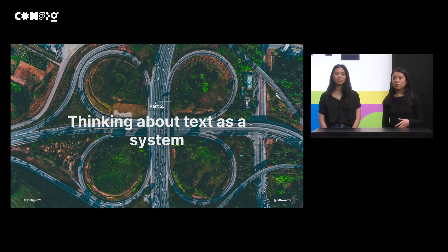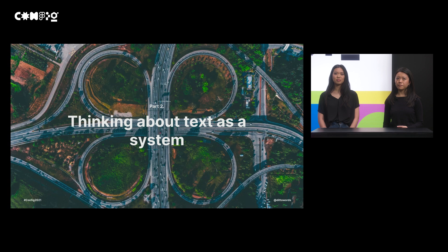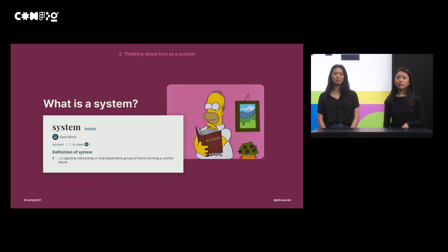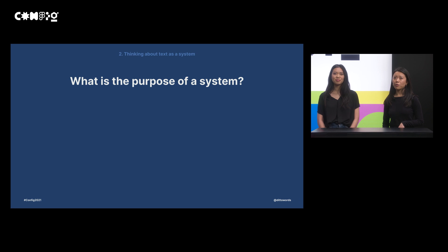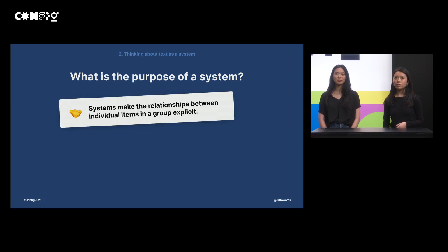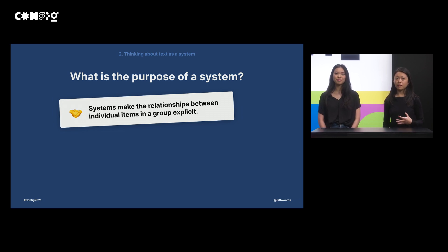Now that we've looked at the role of text in building product, the second topic we wanted to cover is how we can start thinking about text as a system. For those who work heavily in design systems, this might be redundant, but let's take a step back. What is a system? Merriam-Webster defines a system as a regularly interacting or interdependent group of items forming a unified whole. Systems make the relationships between individual items in a group explicit — codifying implicit connections provides the space to be intentional and consistent about how things are related.